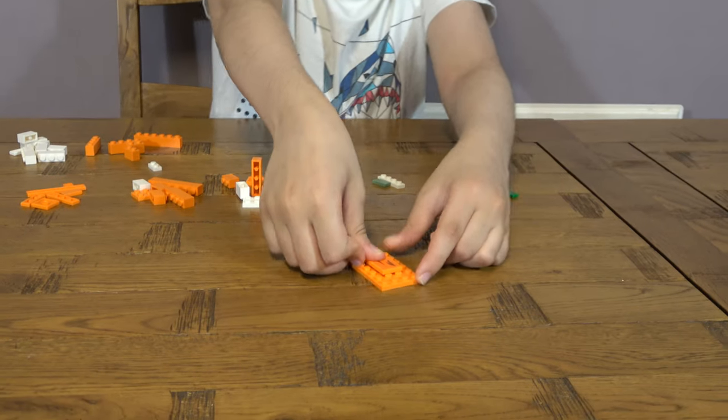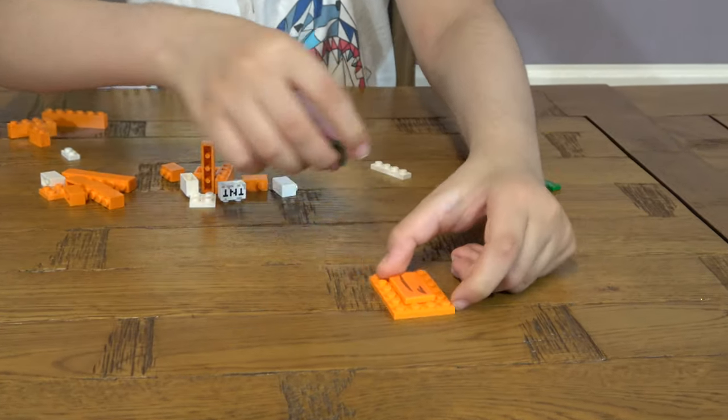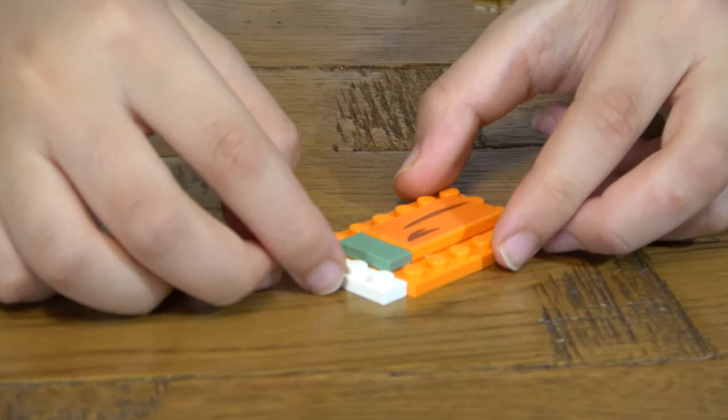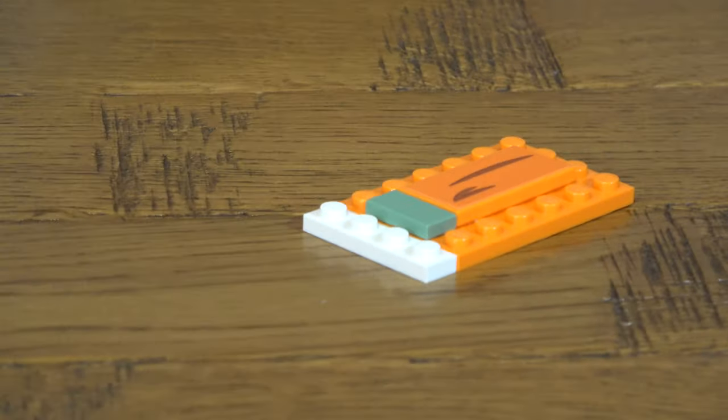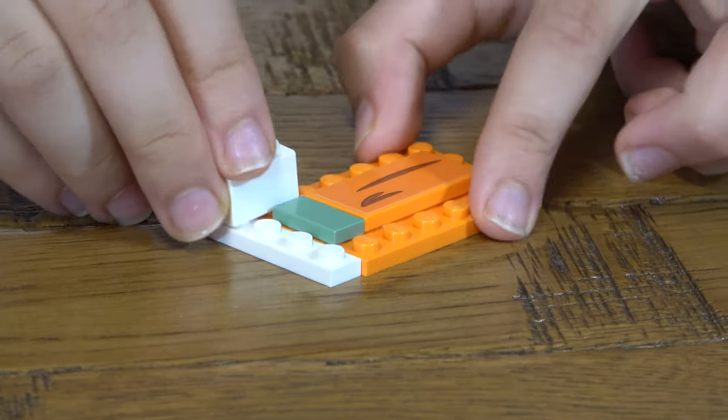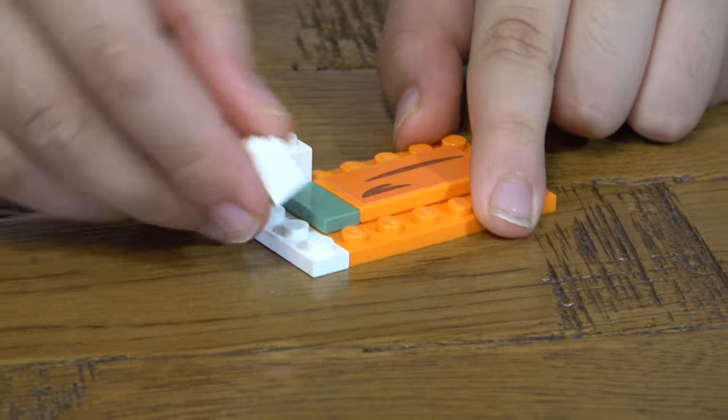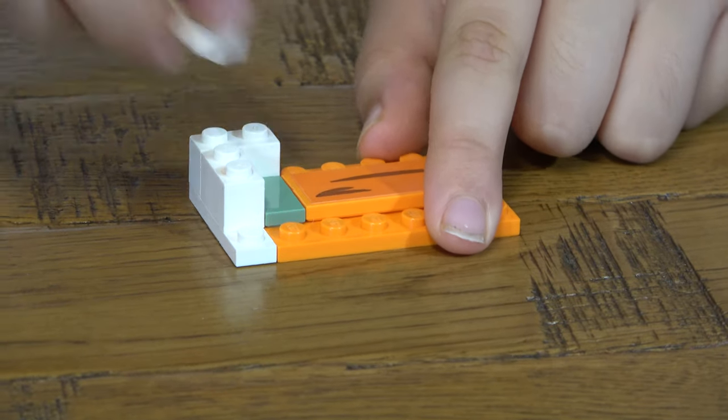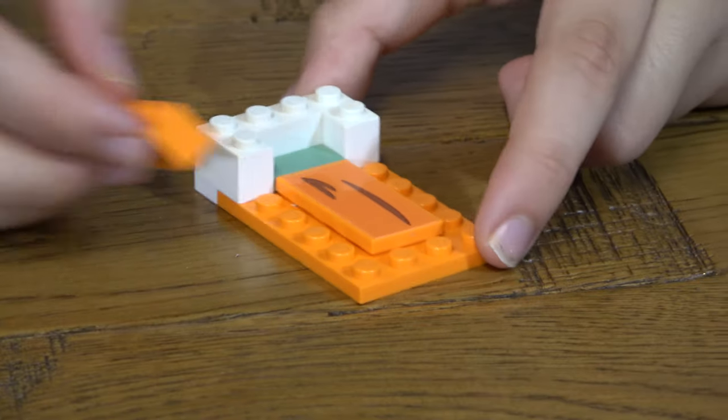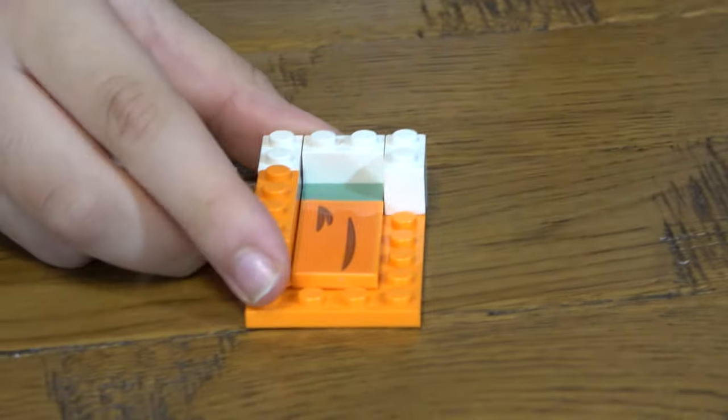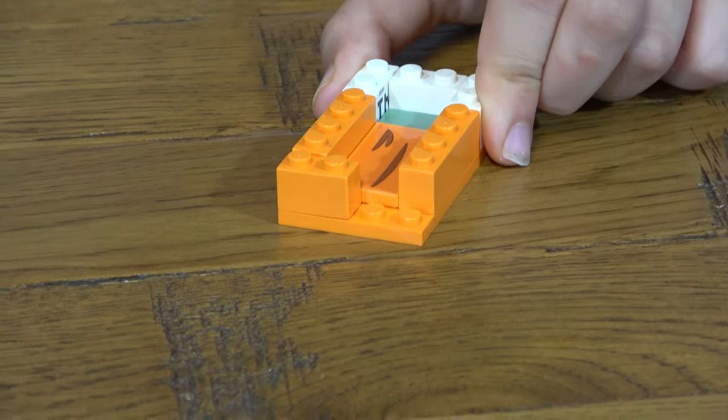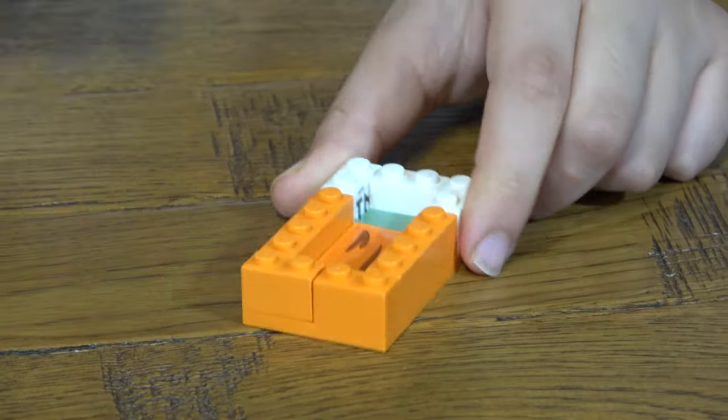The first thing we need to do is place this here. We place it onto there, then we place this here and we just put that slightly there. Then the next thing we have to do is get two of these, or three, and place them on every side like that. Then you get two of these, place them both like this, and then place these here like so.